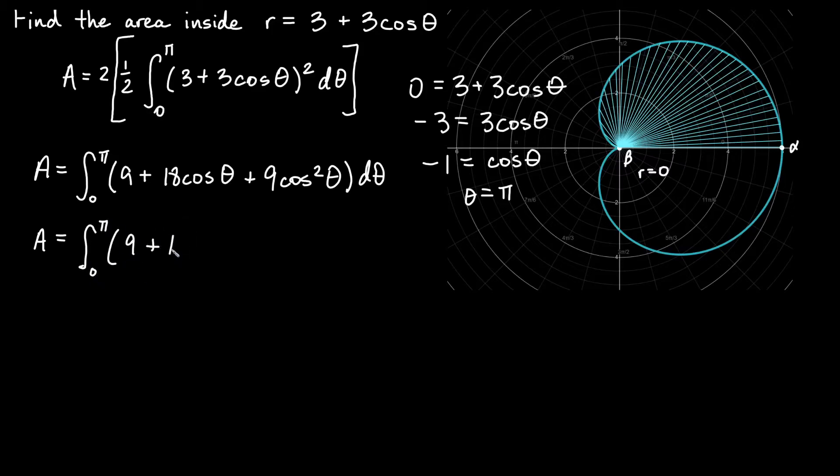So we'll have 9 plus 18 cosine theta will stay. And then here, I'm going to actually have plus 9 times 1 plus cosine 2 theta over 2 from your trig integrals. If you remember integrating an even power of sine or cosine, you'll need to use double angle formula there.